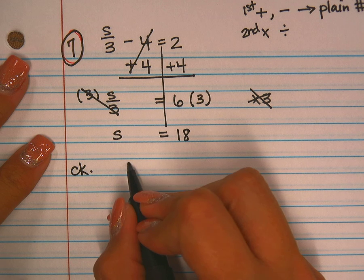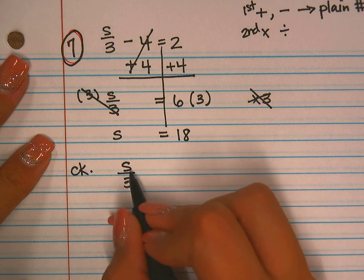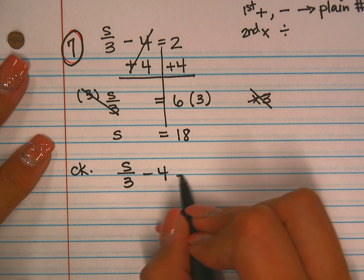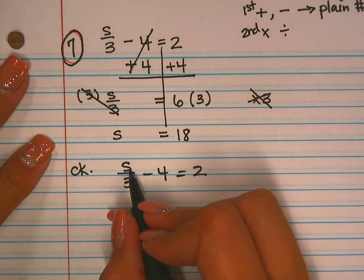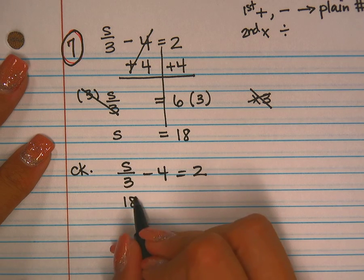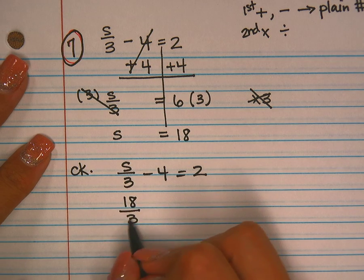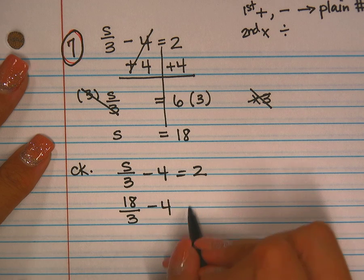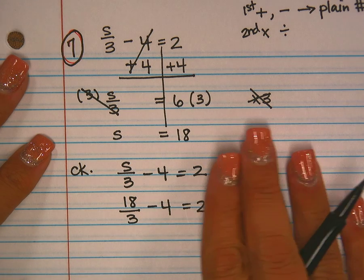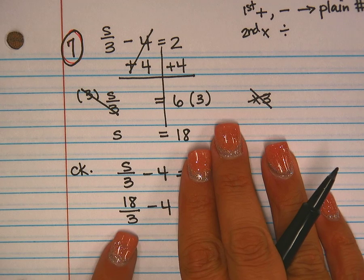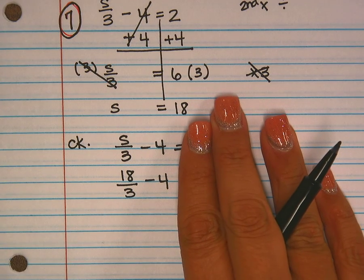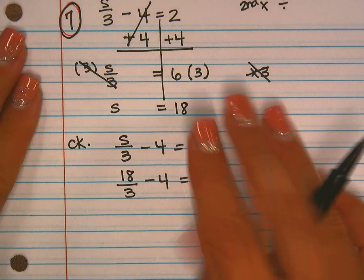My check would look like this - you don't have to check, but it's a good idea. My original problem is s divided by three minus four equals two. I'm plugging in my answer of 18, so that becomes 18 divided by three minus four equals two. I'm ignoring the right side and solving the left side. Division is first according to PEMDAS. 18 divided by three is six.